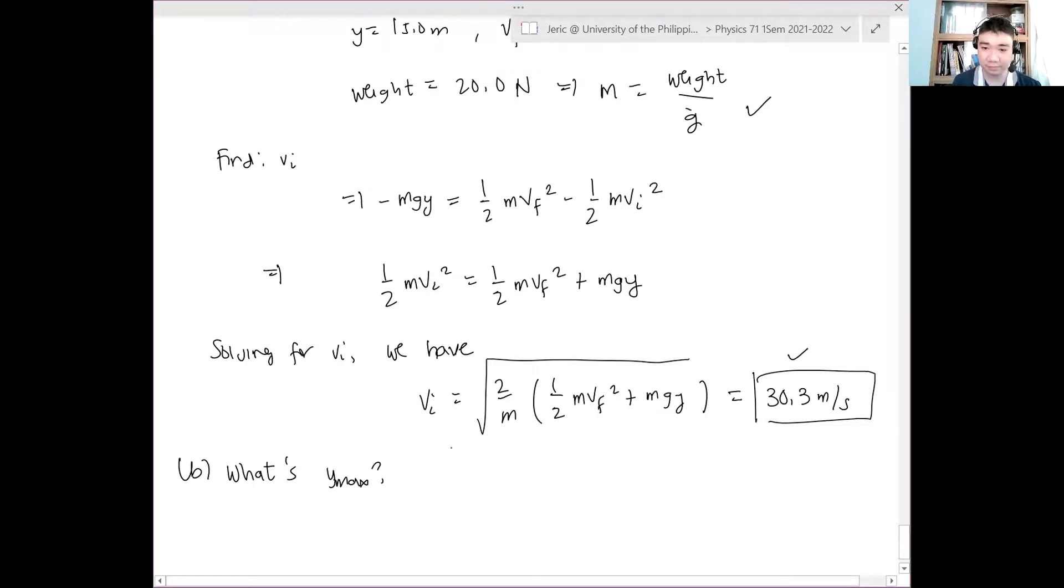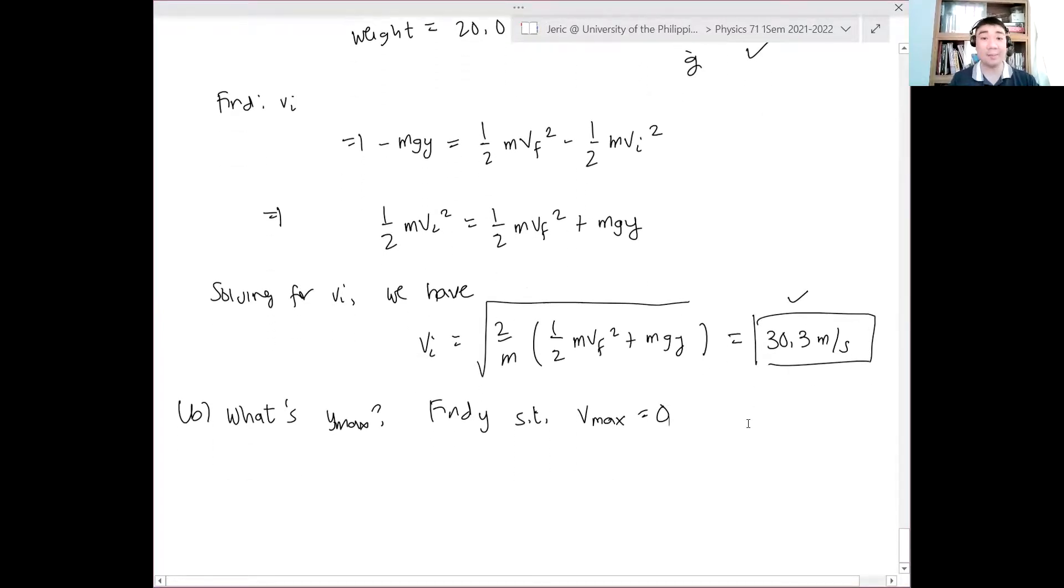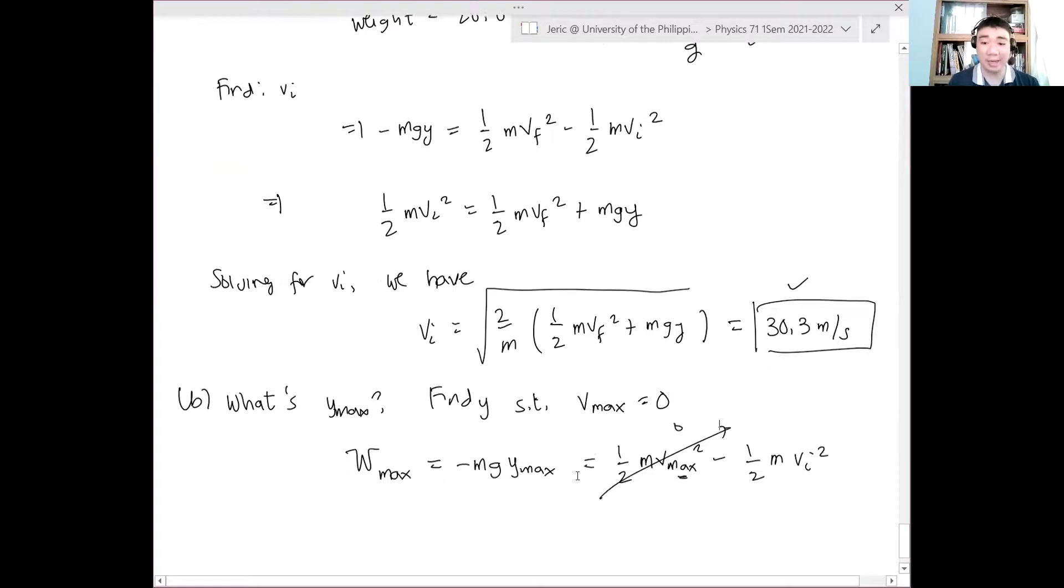So find y such that the final velocity is equal to zero. Now, again, hindi natin gagamit yung kinematic equations. Ang gagamitin natin ay work kinetic energy theorem. So work at the maximum is simply minus mg y maximum, which is just equal to one-half m v maximum squared minus one-half m v initial squared. But we know that V max equals zero. Therefore, this is also zero.